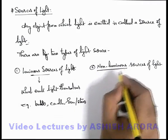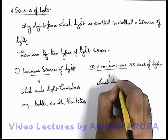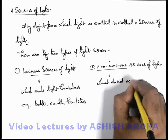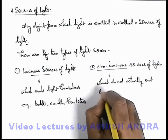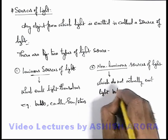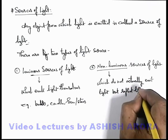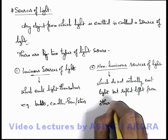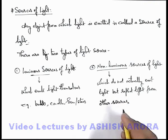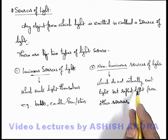When we talk about non-luminous sources of light, these are objects which do not actually emit light, but reflect light from other sources. But in this situation also, as the light is reflected from non-luminous sources, these are visible because of the light which is coming from these objects.